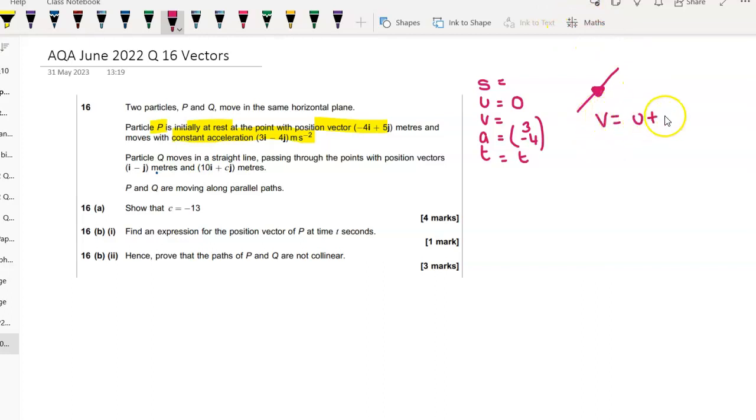So if we use v equals u plus at, that tells us that its velocity, once it's started moving, is 0 plus 3 minus 4 times some value of t. So at each point, its velocity, it's accelerating constantly, so as time increases, your velocity is increasing. This is particle P.